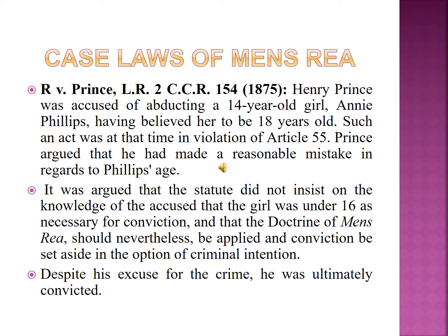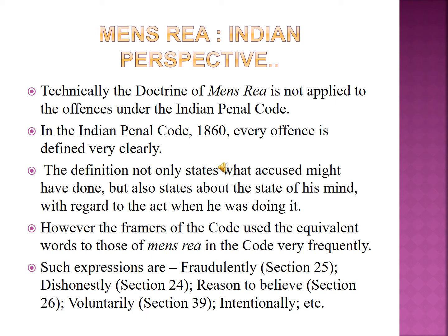The Indian perspective of mens rea is not applied to offenses under the IPC in the same way, because every offense under IPC is defined very clearly. The definition not only states what the accused might have done but also states the state of his mind with regard to the act when he was doing it. However, the framers of the code used equivalent words to those of mens rea very frequently — for example, Section 25 describes 'fraudulently', Section 24 'dishonestly', Section 26 'reason to believe', Section 39 'voluntarily', 'intentionally', etc.